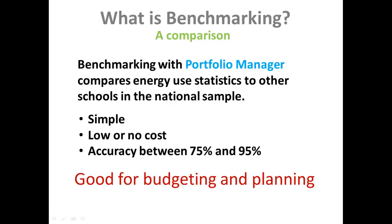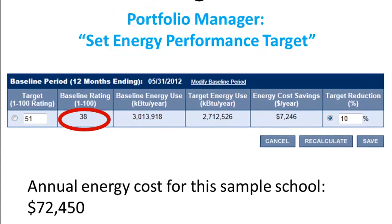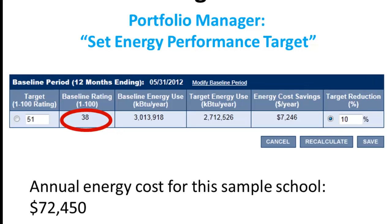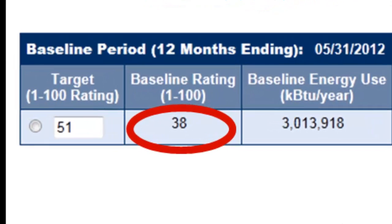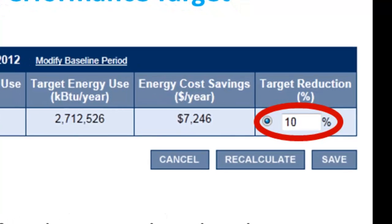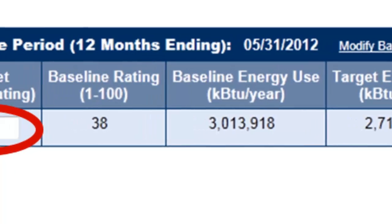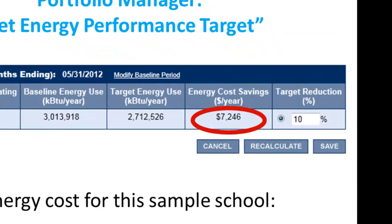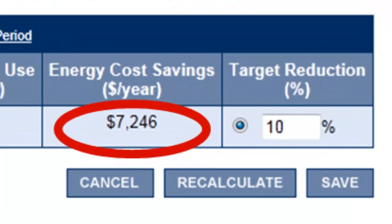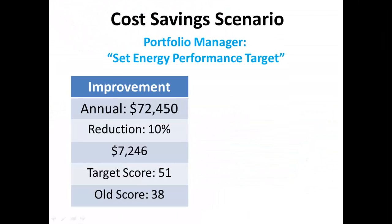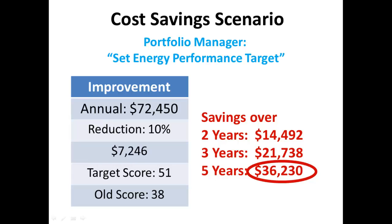Benchmarking is good for budgeting and planning purposes and for use in our strategic energy management plan. Portfolio Manager has a feature called 'Set Energy Performance Target.' In this example, the annual energy cost for a sample school is about $72,000 a year and the current score is 38. If we reduce energy consumption by 10%, the score rises to a target of 51, and we find that about $7,000 a year could be saved. We can also consider what we might invest — two, three, or five years of savings — to accomplish that kind of reduction.